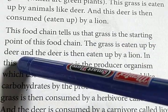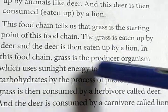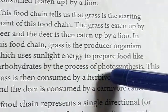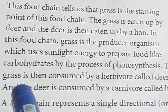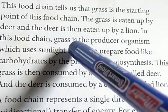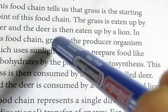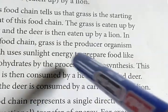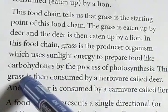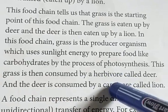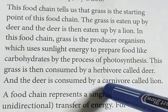The grass is eaten up by deer and the deer is eaten up by a lion. In this food chain, grass is the producer which uses sunlight energy to prepare food like carbohydrates by the process of photosynthesis. This grass is then consumed by a herbivore called deer, and the deer is consumed by a carnivore called lion. So here is a grassland food chain where grass is the main producer, deer is the first consumer, and lion is the carnivore.